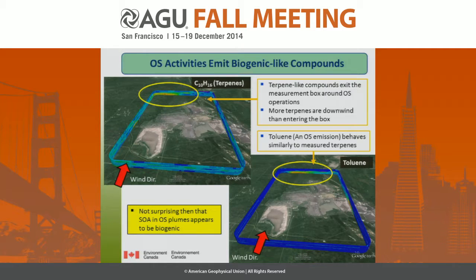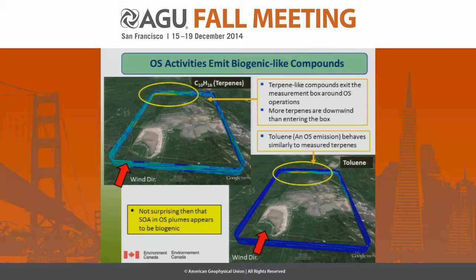So it's not surprising that the SOA we see in these large oil sands plumes appears to be biogenic. You could argue it's still biogenic — a matter of fresh living trees versus two million year old trees — but they're all trees. We could argue that later, I suppose.